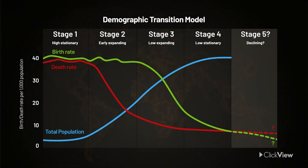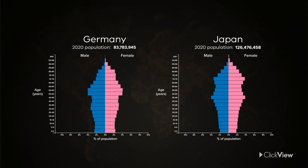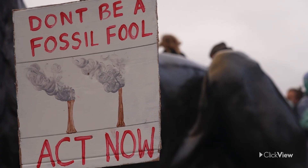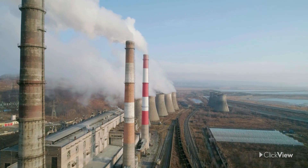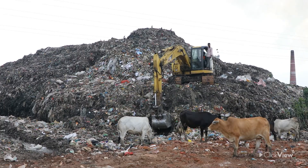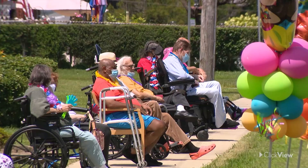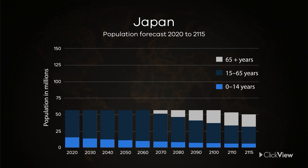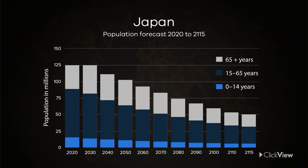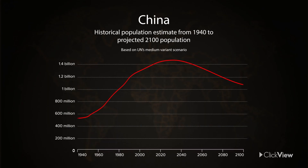When birth rates remain below the approximate 2.1 children per woman that is necessary for keeping even the healthiest population stable, the number of people declines. If current predictions hold, a number of nations could soon join Japan and Germany in the fifth and final stage of the demographic transition model. High costs of living, fear of global catastrophes, and other social pressures could see fewer people choosing to have children. Smaller populations might seem like a win for the environment, demanding fewer resources and leaving less waste, but the pressures on the economy will increase in the short term as there are fewer young people to care for a slowly aging population. Nations such as Germany and Japan are already facing this decline, and other countries such as China might not be far behind.